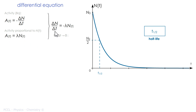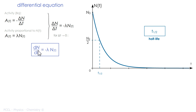The time intervals must be of infinitesimal magnitude. At this point we replace the delta with lowercase d, and we get the derivative of the function. That is why we call it a differential equation — because we have the function and its derivative in the same equation.